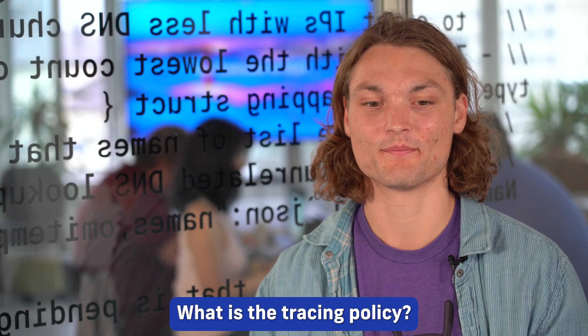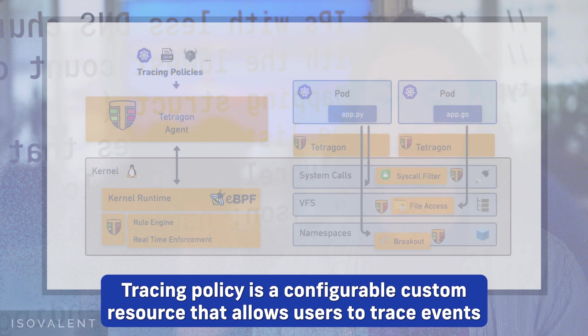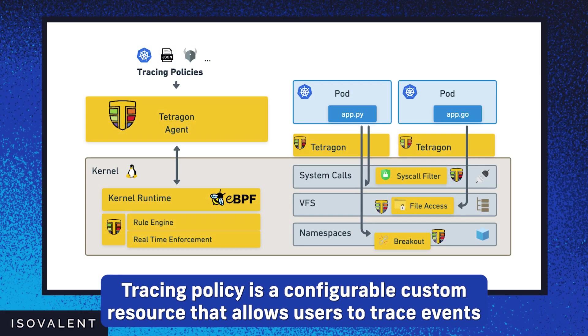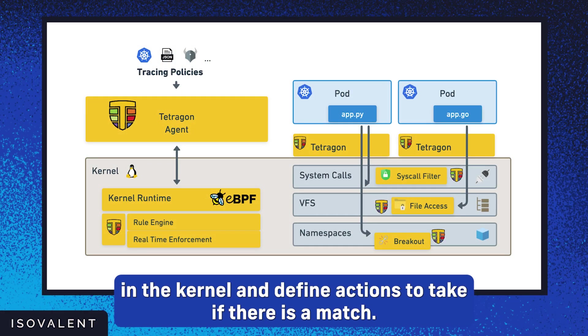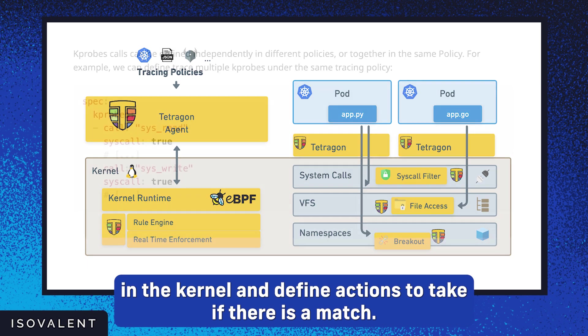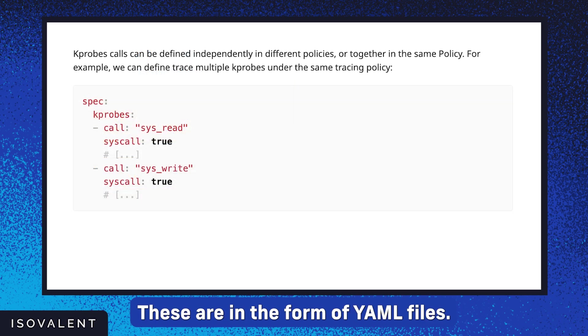What is a tracing policy? A tracing policy is a configurable custom resource that allows users to trace events in the kernel and define actions to take if there is a match. These are in the form of YAML files.